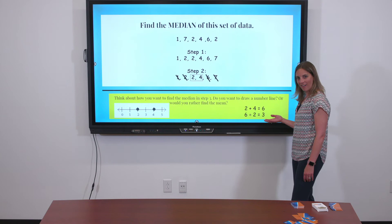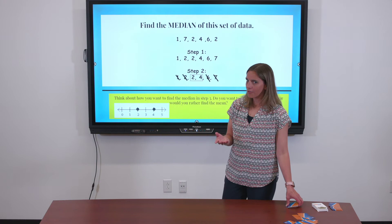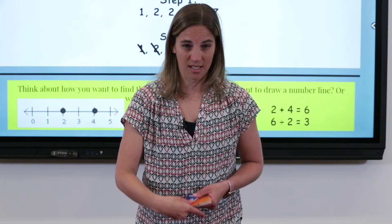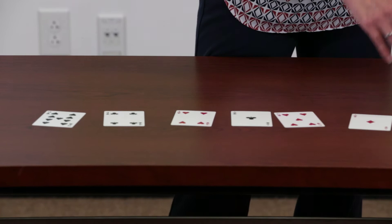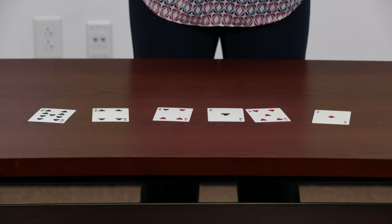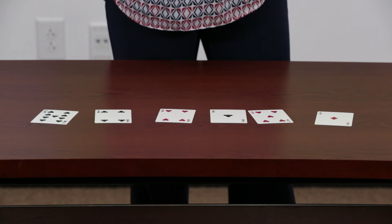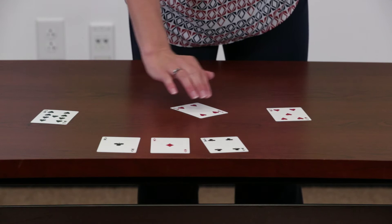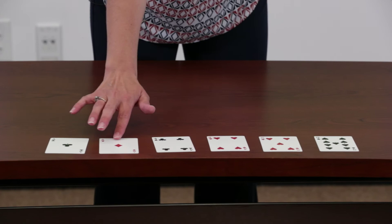Remember, you can try this at home too with cards. Let's take a deck of cards and try it again, but this time I'm going to pull an even set of data — six cards this time. My aces are going to count as ones. In numerical order: one, one, four, four, five, and nine. Does your data look like mine?